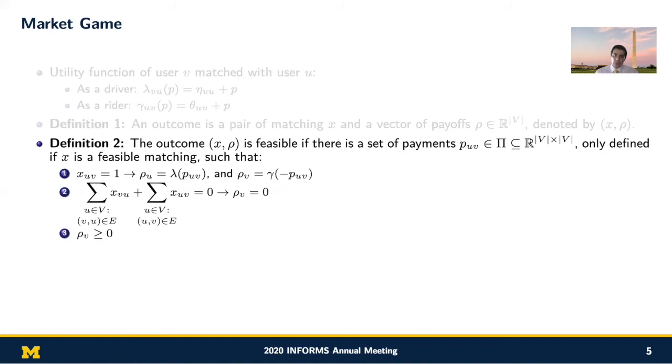The outcome satisfies all these three conditions. The first condition says that if participant U is matched to participant V, the sum of the payoffs should be equal to the potential gain of that match, and also whatever the rider pays, the driver receives. The second condition says that if a user V is not matched to another user, then the payoff should be equal to zero. And finally, the third condition is about individual rationality, which imposes that the payoff of each user should always be greater than or equal to zero.